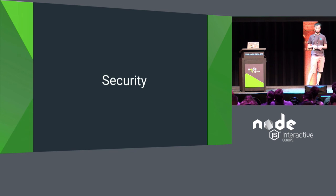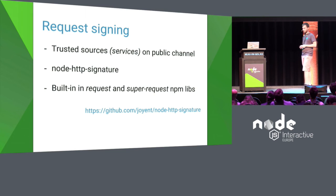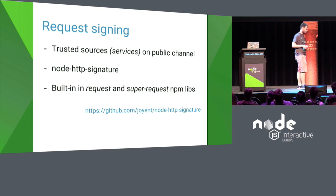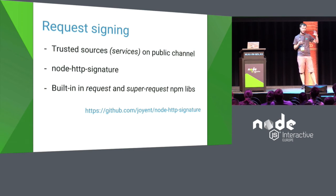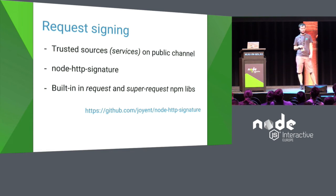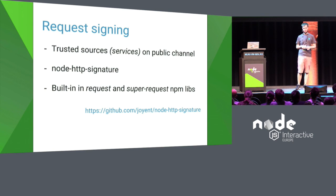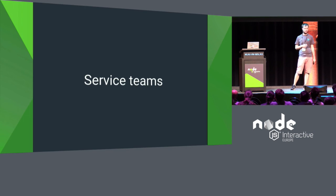For security: when we used a PaaS provider, our services communicated over the public internet, so to prevent unauthorized requests between services we used a technique called request signing. With request signing, you have a private and a public key. The sending service grabs specific headers and the body, creates a hash with the private key, and sends it in a header. The receiving service uses the public key to verify the request came from the expected service. We use the node-http-signature library, which is conveniently built into the request npm module and supertest for testing.